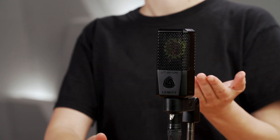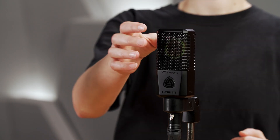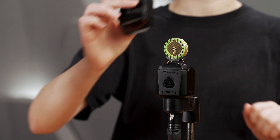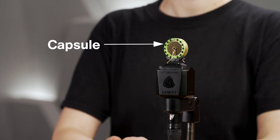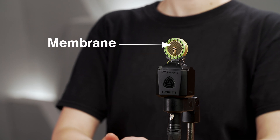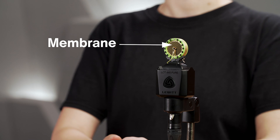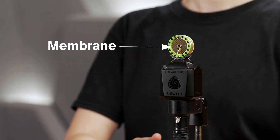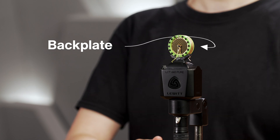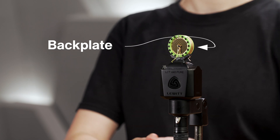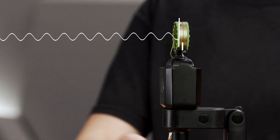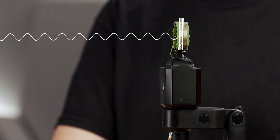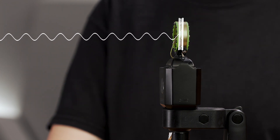This is a large diaphragm condenser mic. Let's remove the mesh and see what's inside. This is the capsule, and here you can see the membrane. It's extremely thin and light, and therefore reacts very accurately to sound — that's why condenser mics sound so detailed. The membrane is electrically charged and behind it sits a fixed back plate. Together the membrane and back plate form a capacitor. When the sound hits the membrane, the capacitance changes, and with the help of internal electronics, condenser microphones convert this change in capacitance into an electrical signal.